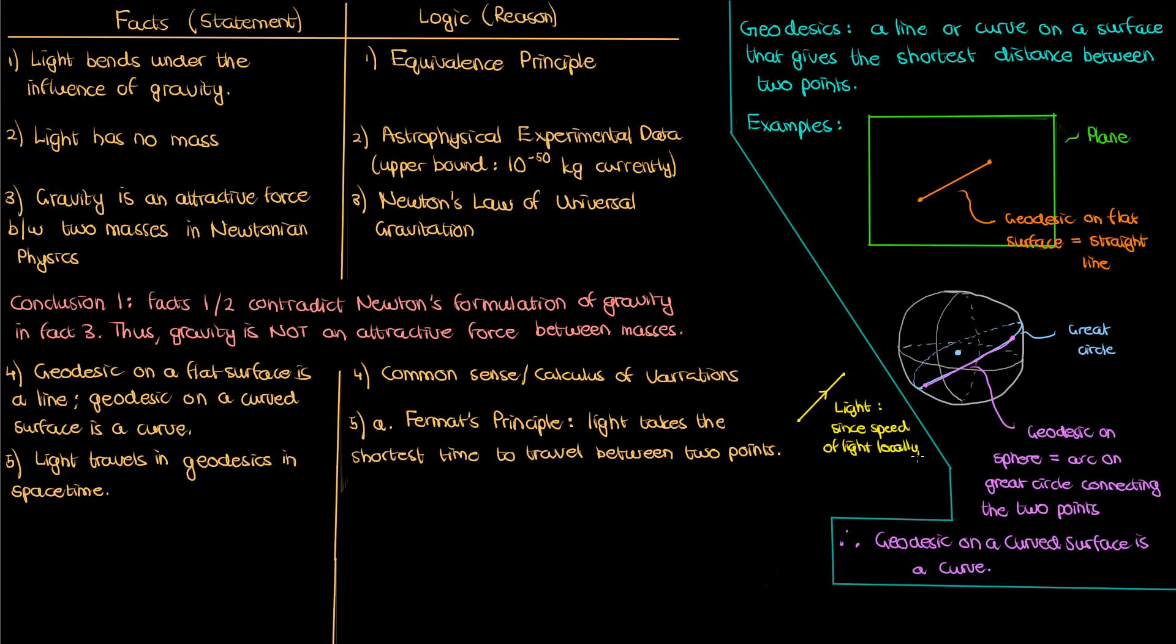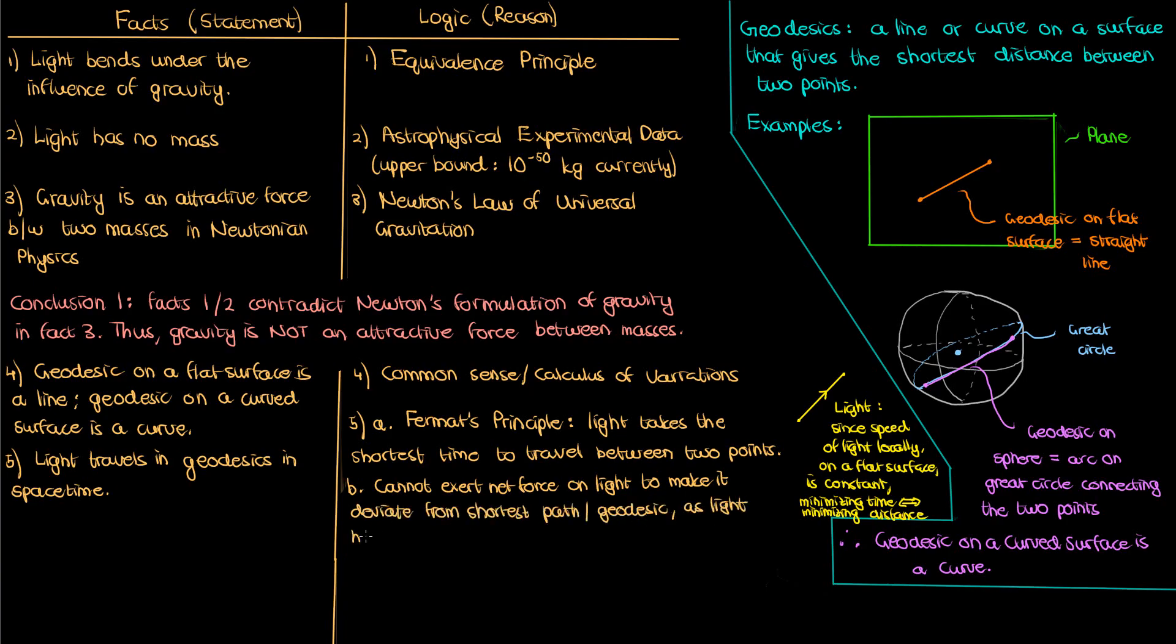Now, since the speed of light locally on this flat surface is a constant, this means minimizing the time traveled between two points is the same as minimizing the distance traveled. The second part behind this logic is that objects in general tend to travel in geodesics, unless there's a net force on them. This also applies to light. As a result, it's impossible for me to make light curve or deviate from its geodesic via an external force because I cannot exert an external force on light.